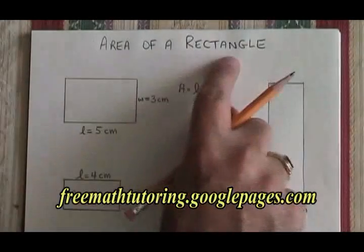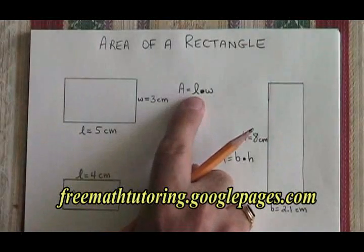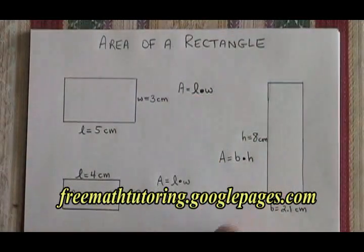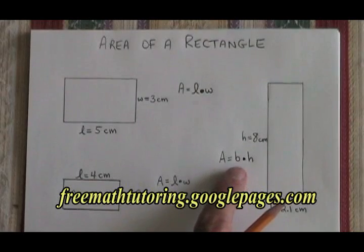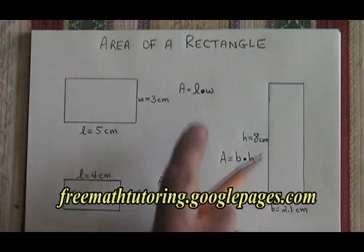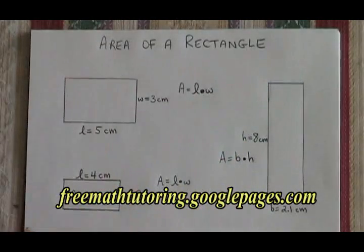The formula for the area of a rectangle is area equals length times width. Sometimes though, the sides are described as the base and the height. These terms are interchangeable, so you don't have to worry about them — just work with what you're given.